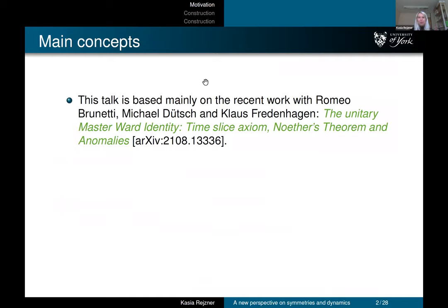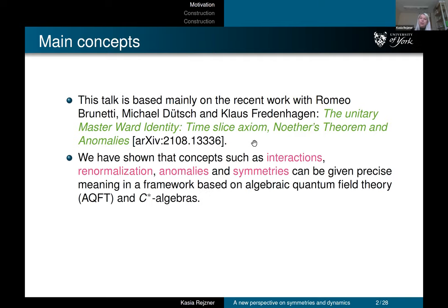So the title is a mouthful, but it's about asymmetries and dynamics in a relatively new approach to constructing nets of C*-algebras in QFT. This talk is mainly based on the following paper: the Unitary Master Ward Identity, Time-Slice Axiom, the Noether Theorem, and Anomalies, which appeared on the archive relatively recently.